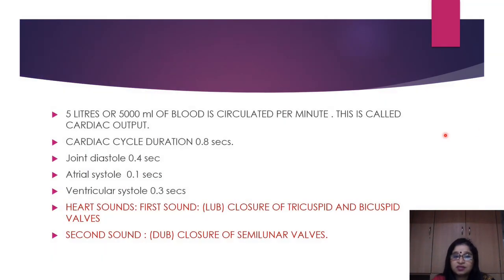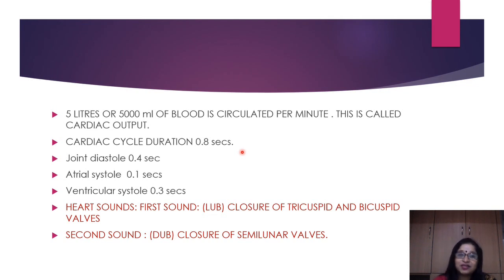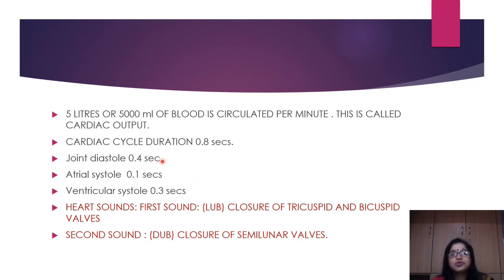In one cardiac cycle, approximately 5000 ml of blood is circulated per minute — this is called the cardiac output. The entire cardiac cycle lasts 0.8 seconds, occurring about 70 to 72 times per minute. Within 0.8 seconds: joint diastole is 0.4 seconds, atrial systole is 0.1 seconds, and ventricular systole is 0.3 seconds — demonstrating the remarkable efficiency of the heart muscle.